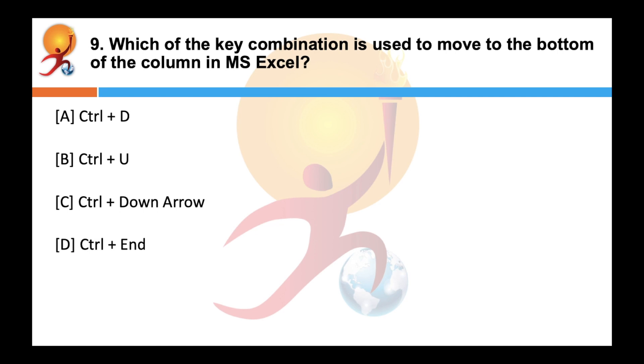Which of the key combination is used to move to the bottom of the column in MS Excel? Correct answer is C, CTRL plus down arrow. So when the CTRL key is pressed with the down arrow, the last cell of the column gets activated. It is a shortcut to move to the bottom of the column in Excel.